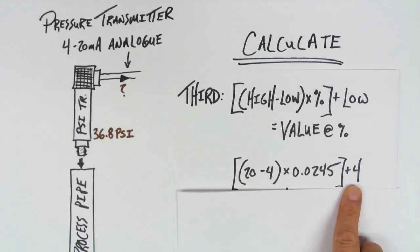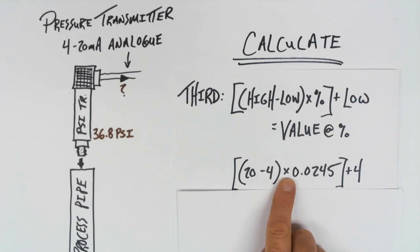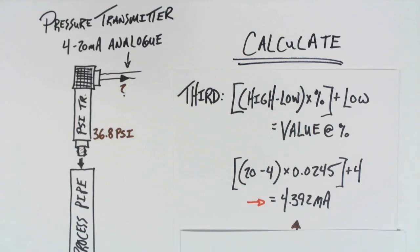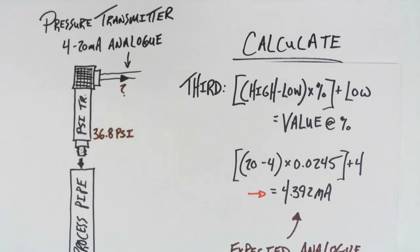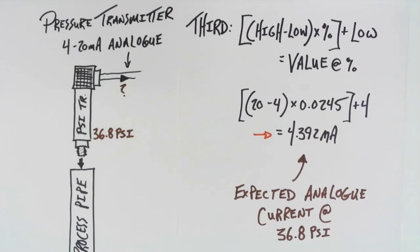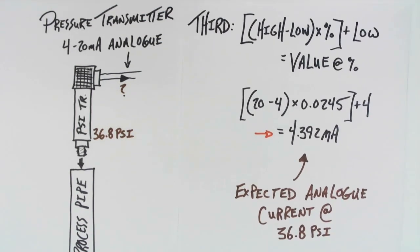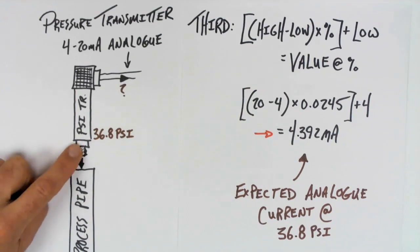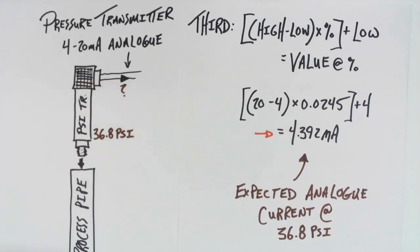Remember, there's a bunch of brackets in here, so if you simply plug your numbers in without taking into account the order of operation, you're going to come out with a number that's incorrect. What we get from this is 4.392 milliamps of analog current. This is the value of current that we would expect at 36.8 PSI. This calculation can be used to validate or verify any amount of pressure that we happen to have on the transmitter for what the actual signal value should be.